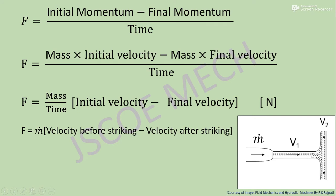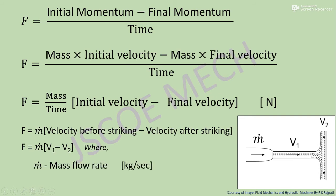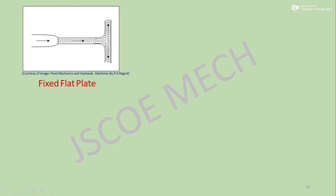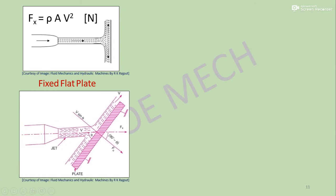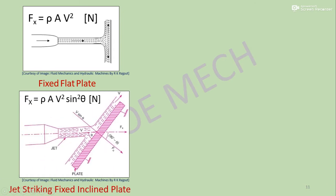Now this concept is applied for the plate. With jet velocity v₁ as initial and v₂ as final, the formula for force is F equals ṁ(v₁ − v₂) in Newtons, where ṁ is mass flow rate in kg/s and v₁, v₂ are velocities of the jet in m/s. For a fixed flat plate, the force exerted by the jet in the direction of the jet is ρAv² Newtons. For a jet striking a fixed inclined plate, it is ρAv²·sin²θ Newtons, where θ is the angle between the jet and the plate.